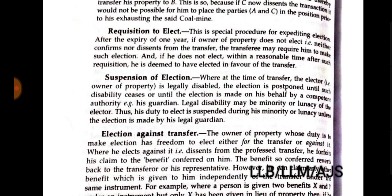Requisitions to elect. This is a special procedure for expediting election after the expiry of one year. If the owner of the property does not elect — neither confirms nor dissents from the transfer — the transferee may require him to make such election. And if he does not elect within a reasonable time after such requisition, he is deemed to have elected in favor of the transfer.